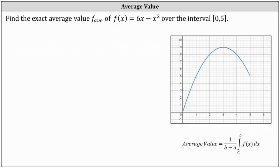We're asked to find the exact average value of f of x equals 6x minus x squared over the closed interval from 0 to 5.